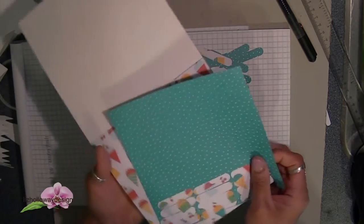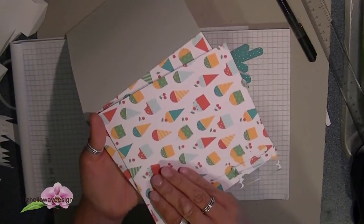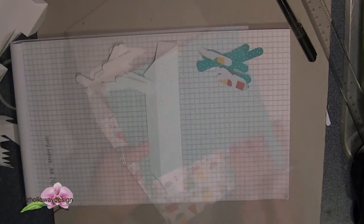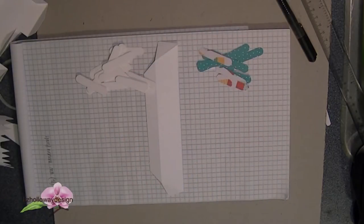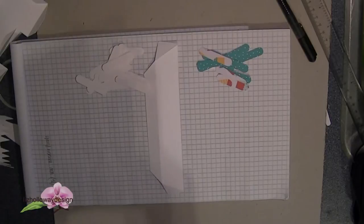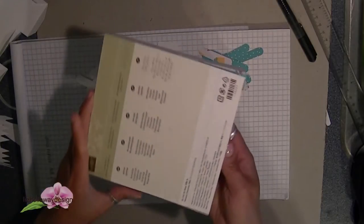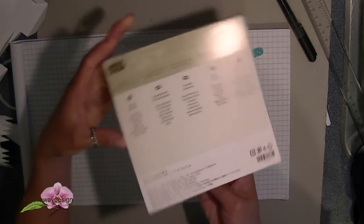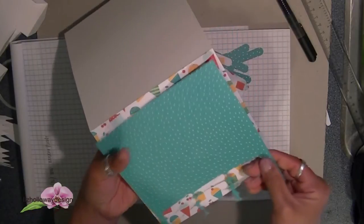What I have already done was I pre-cut all my materials out and also have punched 16 word windows out of the Whisper White cardstock and 16 word windows out of the Cherry on Top Designer Series paper. I'm using the Bermuda Bay polka dot and on the other side is the ice cream cupcakes.